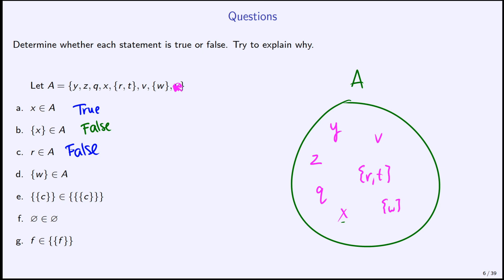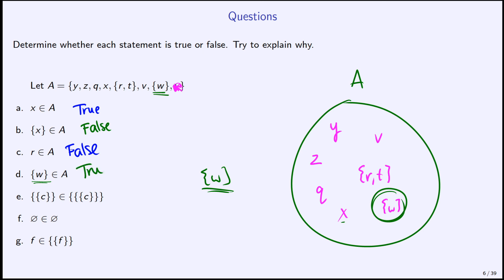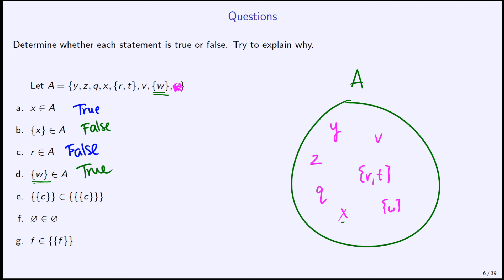Is the set {W} an element of A? I need to find curly brace W in A. Looking in the set above, I see it right there — the set containing W is between our commas. Visually I can see it too. So this one is true. The set {W} is an element of A because that symbol is in our set.